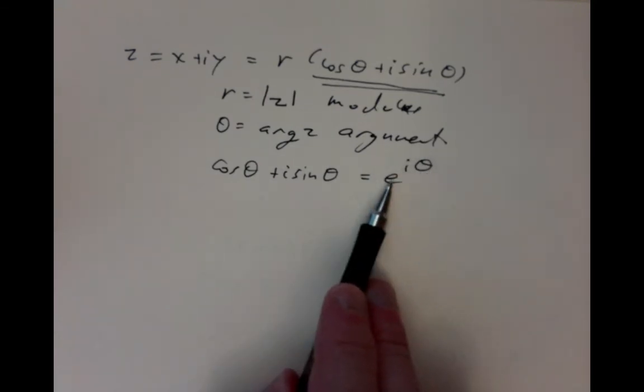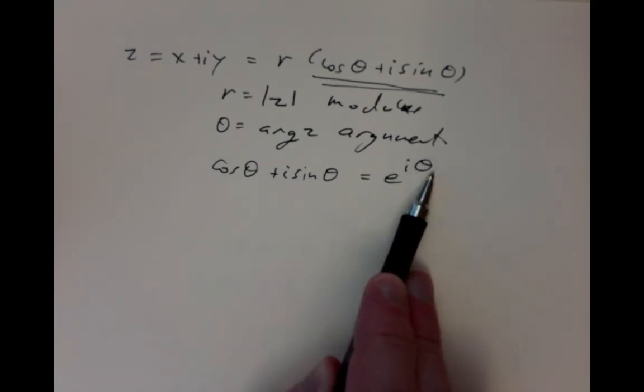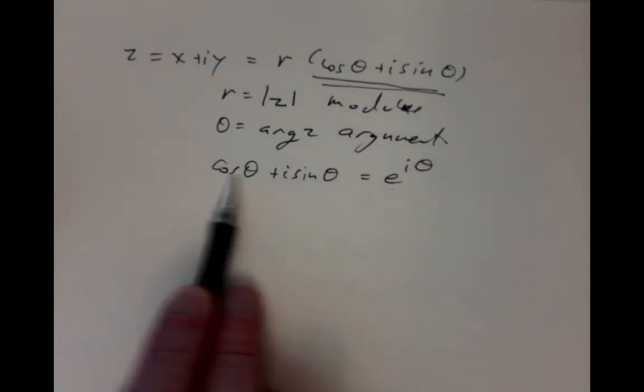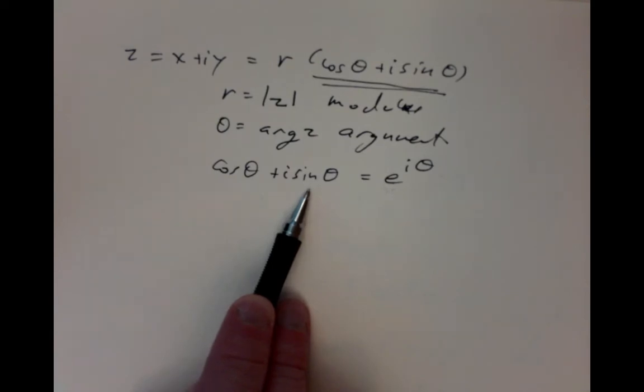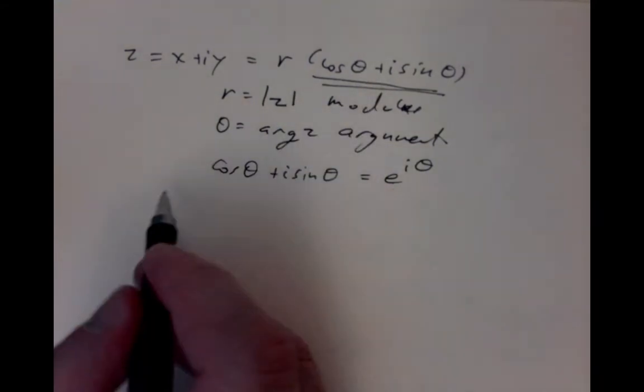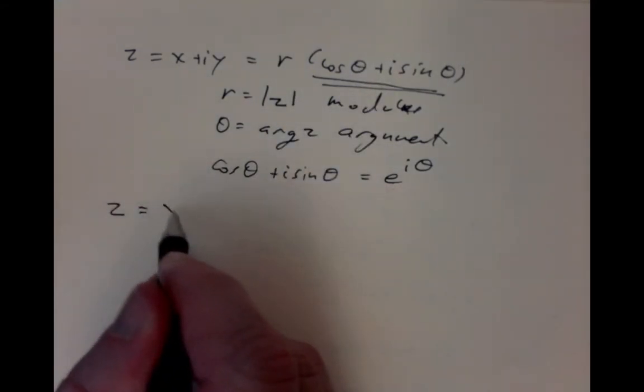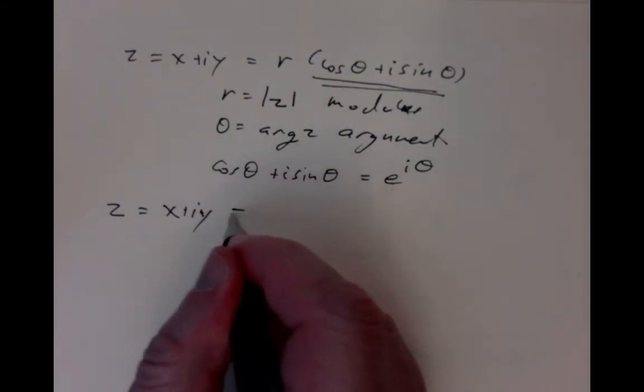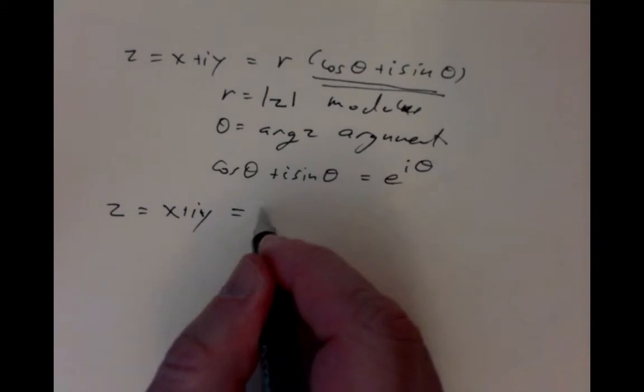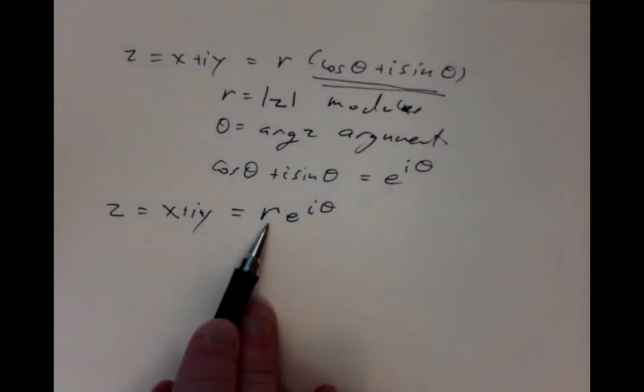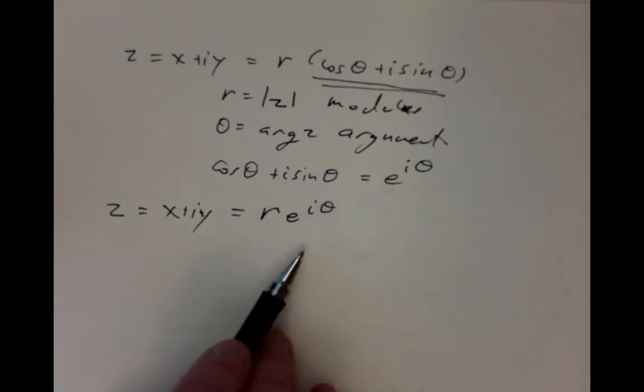We'll package up angles into this exponential i times angle over and over again. It gets rid of having to talk about cosine or sine, all that trigonometry. So every complex number can be written either in rectangular coordinates as x plus iy, or in this neat package as its polar coordinates, r e to the i theta, the modulus and the argument.